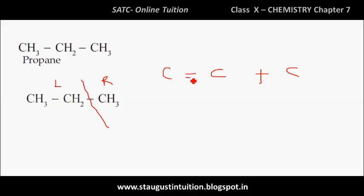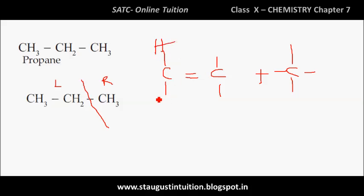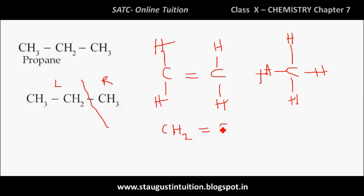This is a double bond. This is hydrogen. This is 2 bonds. This is 4 bonds. This is 2 bonds. This is 4 bonds. This is hydrogen. This is a double bond, 4 bonds. This is 2 bonds. This is CH2. Double bond CH2. Clear? And here CH4.